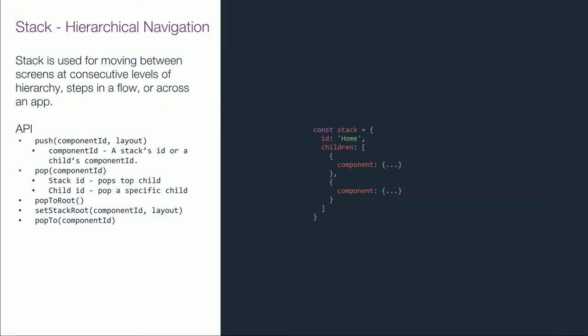Let's see how we can use this component. This is how we declare a stack — just like the component, it has an ID, but it also has children. A stack can contain multiple children because you can push multiple screens into it. The API is a standard stack API: you push screens into the stack and the pushed screen is added to the top. When you pop a screen, the topmost screen is removed. We don't remove screens from the middle of the stack because that creates unpredictability — if a user pushes screens and you remove one from the middle, he goes back expecting to see a screen and doesn't.